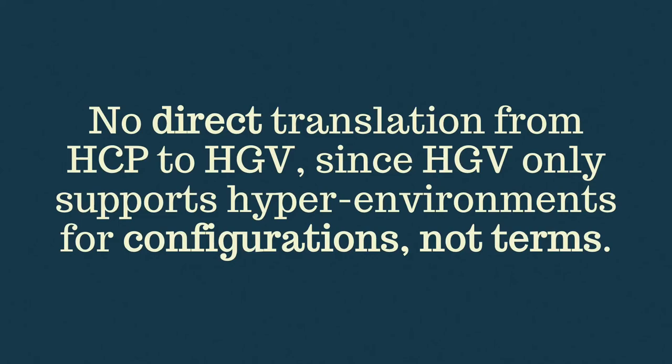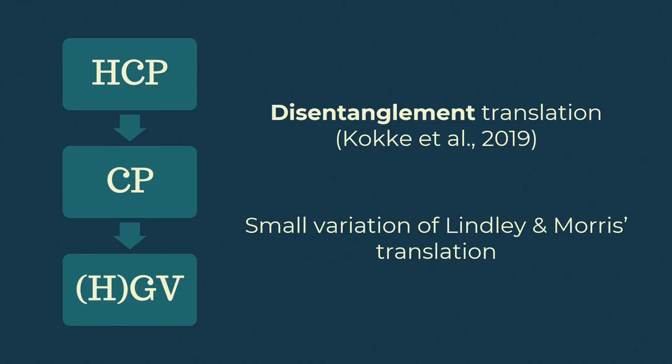Now, translating in the other direction from HCP into HGV is trickier, since we only use hyperenvironments in typing processes and not terms. So we don't split fork into spawn and new, for example, since this ends up being more trouble than it's worth. We can't get a direct translation, but what we can do is translate HCP to HGV if we go via CP. So we use Cocker's disentanglement translation to translate HCP into CP. Then we use a small tweak on Lindley and Morris's translation to translate CP to GV. And then we've already shown that all processes typable in GV are typable in HGV. So we've now got the full translation.